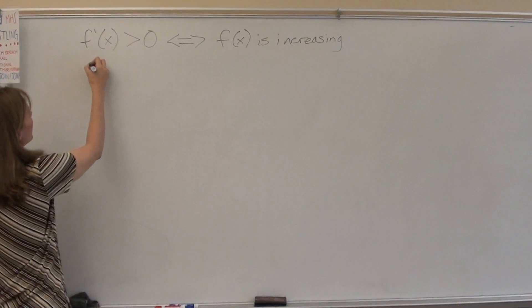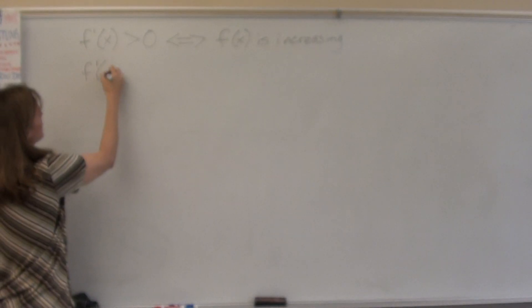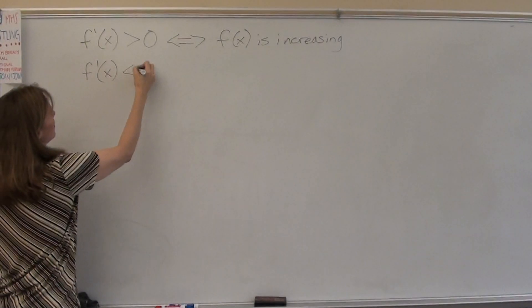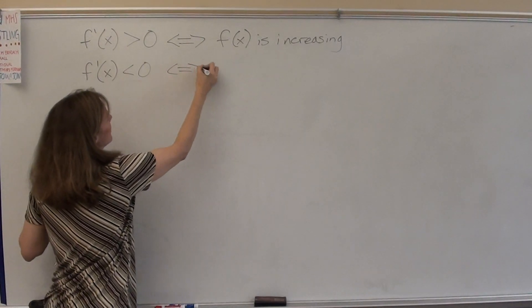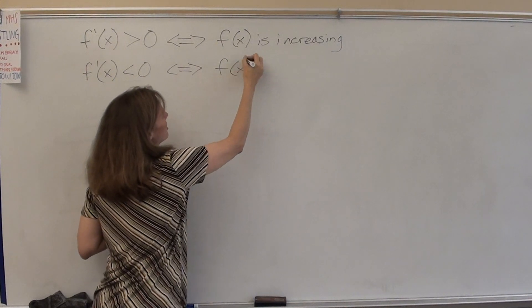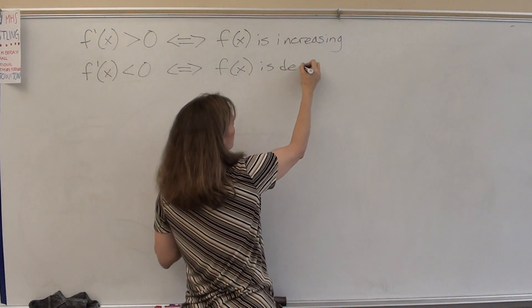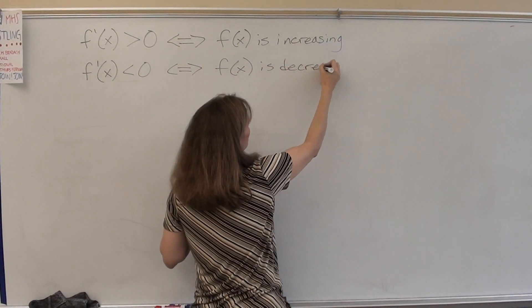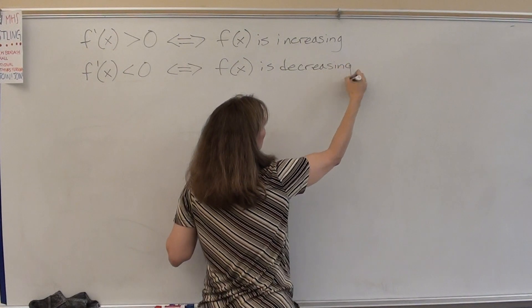And if we do the opposite — if the derivative is negative, this implies that the function is decreasing. A negative slope means a decreasing function.